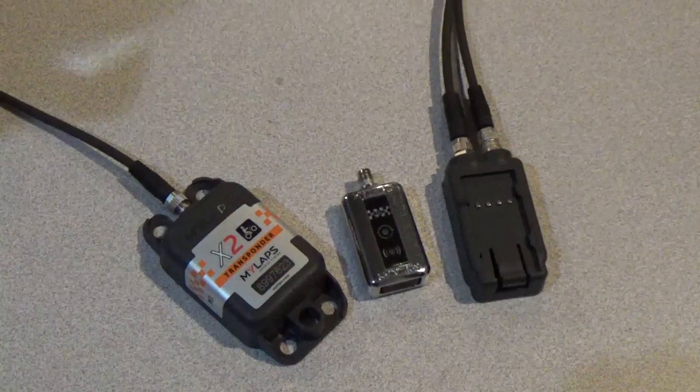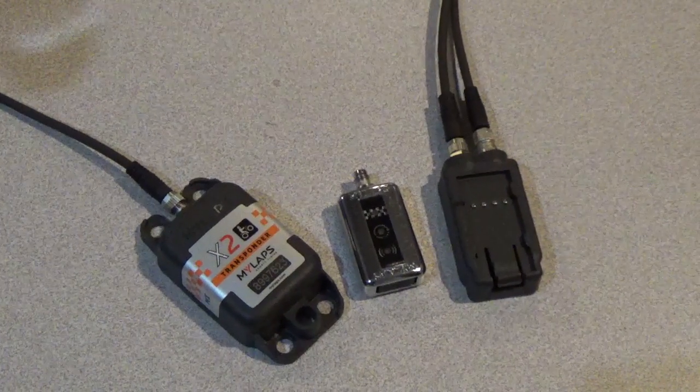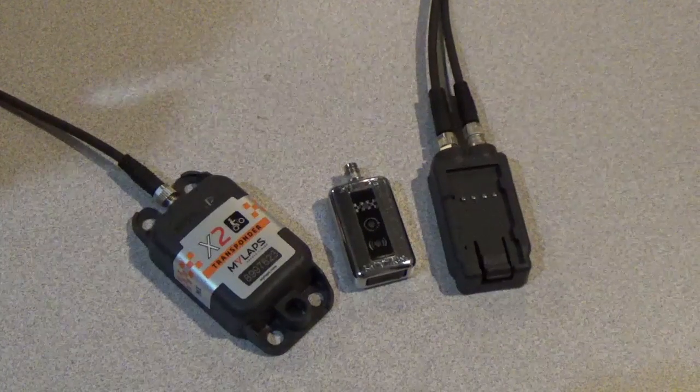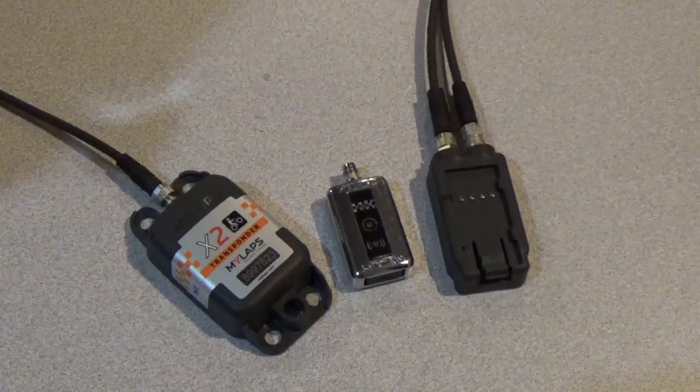This is an example of the MyLabs X2 transponder using direct power. I want to explain how to set it up and what to look for in any troubleshooting.